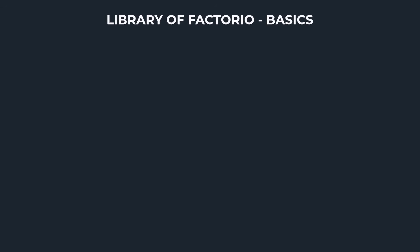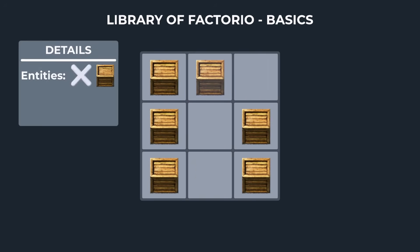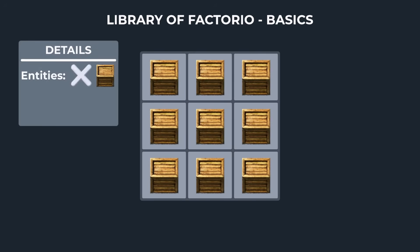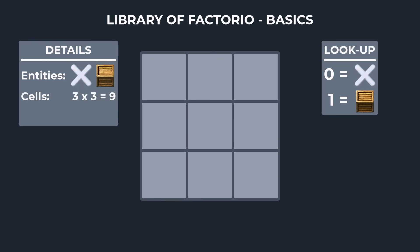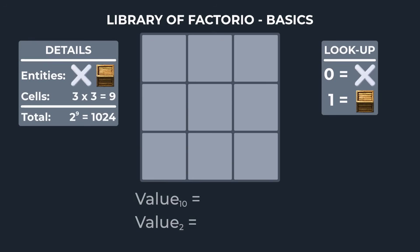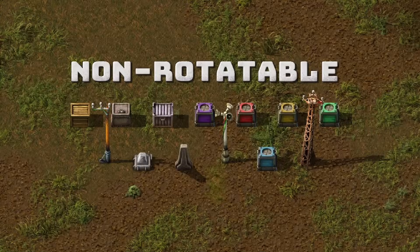With those rules in place, let's assume the simplest case: filling an area with wooden chests. At each cell, we can either place a chest or not. This gives our system a base of two, where one represents a chest and zero represents an empty cell. So for a three by three grid, we have a total of two to the ninth combinations, and to generate one, we pick a number, convert it to base two, and place the chests where they need to go. From here, it's trivial to expand this to more entities — we'll stick to ones that occupy a single cell and cannot be rotated, filtering our entity pool to just 14 plus an empty cell. Let's try it out.